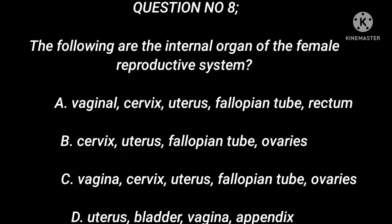Question number 8. The following are the internal organs of the female reproductive system. A. Vagina, cervix, uterus, fallopian tube, rectum. B. Cervix, uterus, fallopian tube, ovaries. C. Vagina, cervix, uterus, fallopian tube, ovaries. D. Uterus, bladder, vagina, appendix.